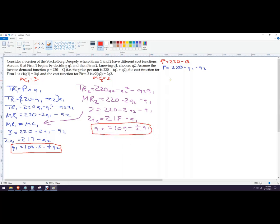And what we're going to do is we're going to go back to this function up here. And we're going to plug in firm 2's reaction function into the demand function here. So it would be 220 minus Q1 minus firm 2's reaction function, so 109 minus 0.5 Q1.